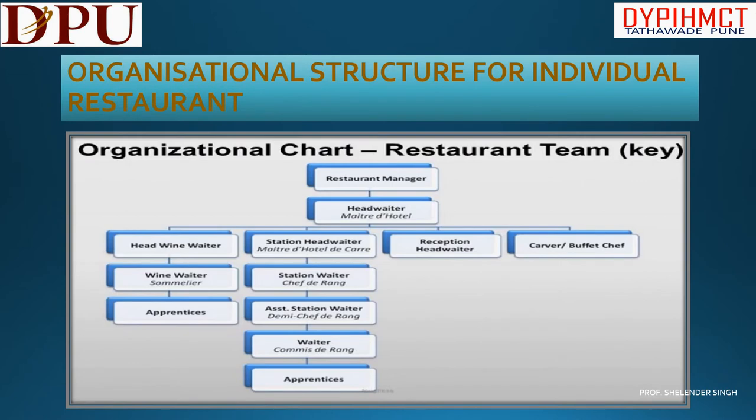Next we will discuss the organizational structure for an individual restaurant, also called a restaurant brigade. The first and most senior designation is Restaurant Manager, then Head Waiter — also called in French, Maître d'Hôtel — followed by Head Wine Waiter, and Section Head Waiter, called in French Maître d'Hôtel d'Carré.